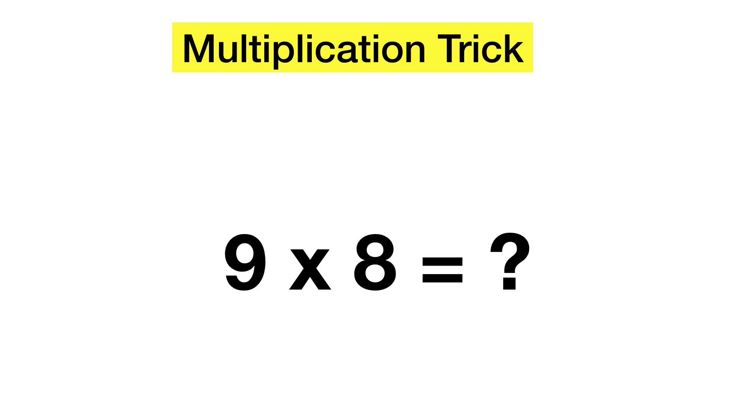So, again, the first part is to check the differences from 10. In this case, because 9 and 8 are both below 10, these differences will have to be negative.